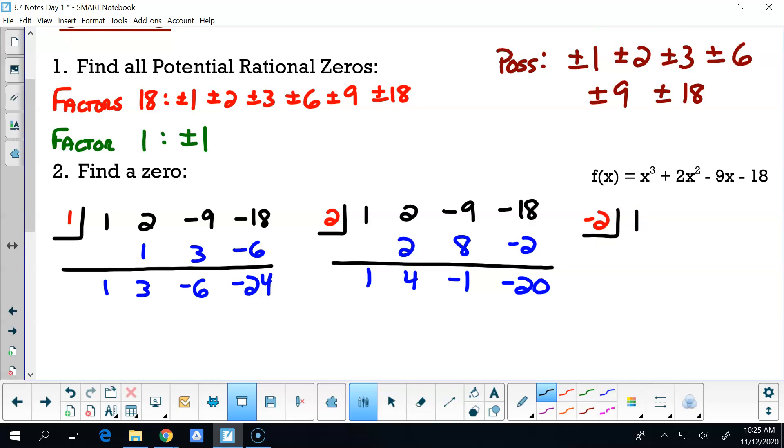One, two, nine, fifteen. One, negative two, zero, zero, negative nine, eighteen. Hey, guess what? We found one, right? Found one.